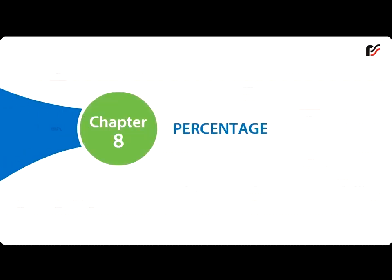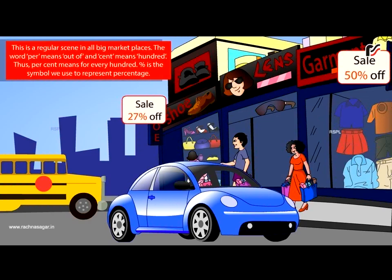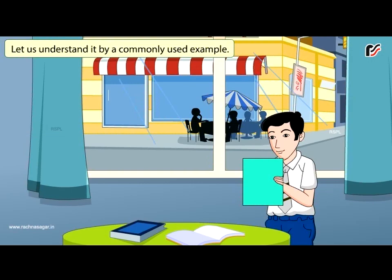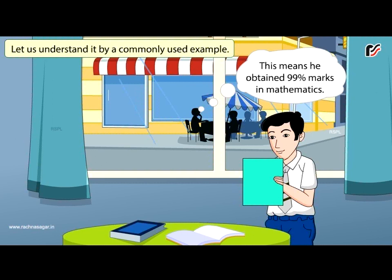Chapter 8: Percentage. This is a regular scene in all big marketplaces. The word 'per' means 'out of' and 'cent' means 'hundred.' Thus, percent means 'for every hundred.' The symbol % is used to represent percentage. Rahul is a very intelligent student of Class 5. He obtained 99 marks out of 100 in Mathematics in the first unit test, which means he obtained 99% marks in Mathematics.